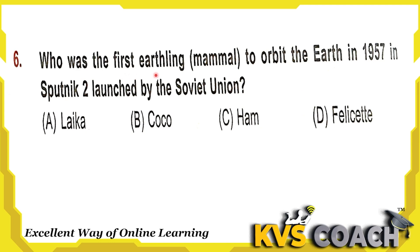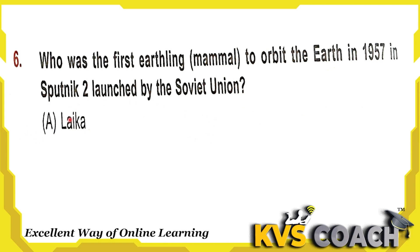Next question: who was the first earth-linked mammal to orbit the earth in 1957 in Sputnik 2, launched by the Soviet Union? The right answer is option A — Laika. It is a dog.